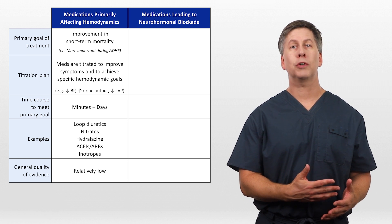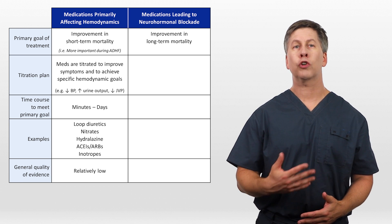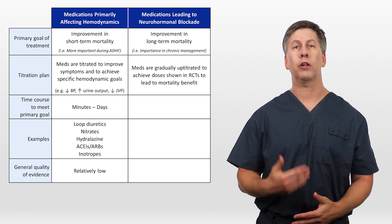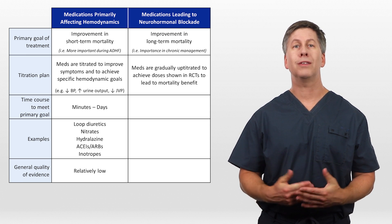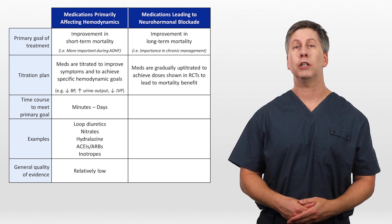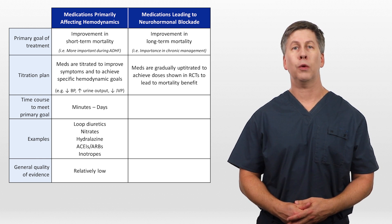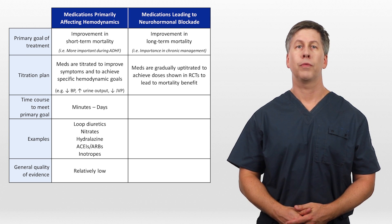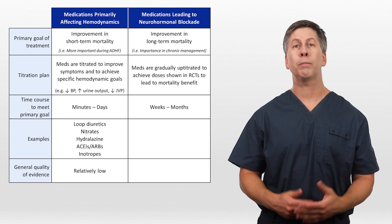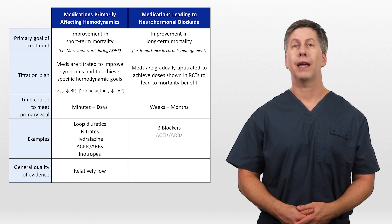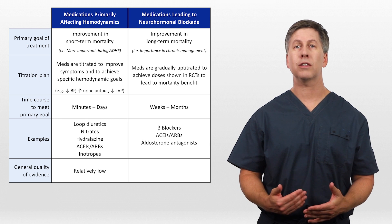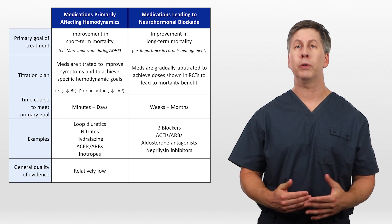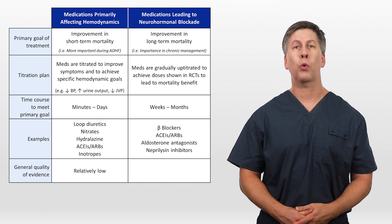In the other category, meds which lead to neurohormonal blockade, these are intended to improve long-term mortality and are more important in chronic management. The meds are gradually uptitrated to achieve doses shown in clinical trials to lead to mortality benefit. In other words, we continue to slowly increase the dose even if the patient is feeling well and vitals are normal. We only stop uptitrating when the goal dose is met, or the patient develops side effects, at which point we back off a little. It can take weeks to months to meet titration goals. Examples include beta blockers, ACEs and ARBs again, aldosterone antagonists such as spironolactone, and neprilysin inhibitors. The general quality of evidence supporting these meds is relatively high.